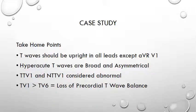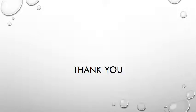Take-home points: T waves should normally be upright in all leads except AVR and V1. Hyperacute T waves are broad and asymmetrical and can be seen in the early stages of an ST elevation MI. Tall T waves in V1 indicate a high likelihood of coronary artery disease, and a new tall T wave in V1 implies acute ischaemia. A T wave in V1 greater than the T wave in V6 is what Marriott described as loss of precordial T wave balance. Well done and thanks to Adam Smith and his colleagues for spotting those hyperacute T waves and getting the patient into PPCI. Thank you all for watching.